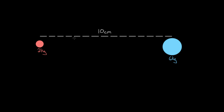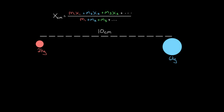Let's say you wanted to know where the center of mass was between a two kilogram mass and a six kilogram mass. They're separated by 10 centimeters, so it's somewhere in between them. We know it's going to be closer to the larger mass, because the center of mass is always closer to the larger mass. But exactly where is it going to be? We need a formula to figure this out, and the formula for the center of mass looks like this.